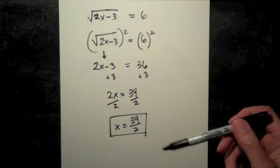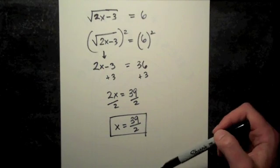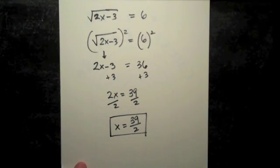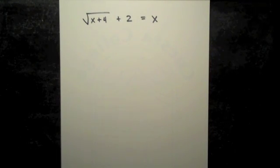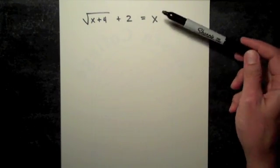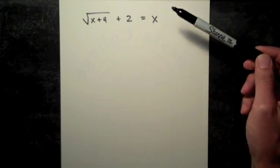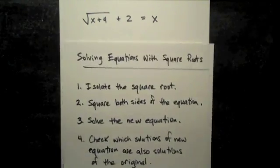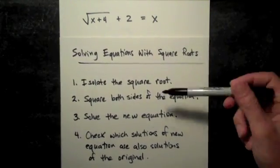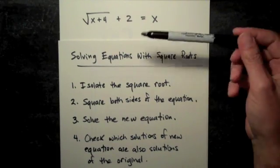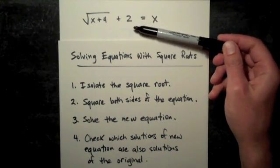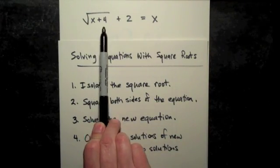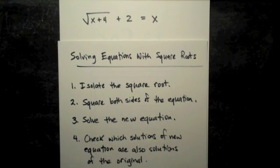If it had not worked, we would have just crossed it out and said no solutions. Let's try another example. Square root of x plus 4 plus 2 equals x. Now when you consider step one, isolate the square root, we can see we actually have some work to do. Here's the square root with the x plus 4. There's a plus 2 sitting outside.